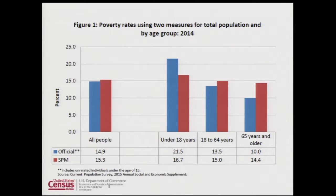This first figure in the SPM report shows poverty rates using the official measure and the supplemental poverty measure. The SPM rate is a little bit higher than the official rate for all persons, lower for children, higher for working-age adults, and quite a bit higher for the 65 and over population.